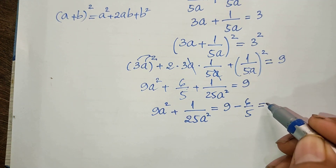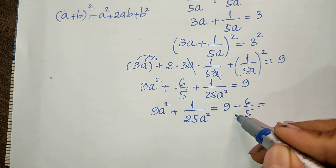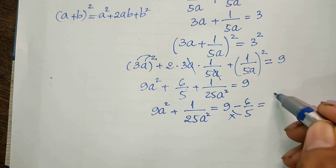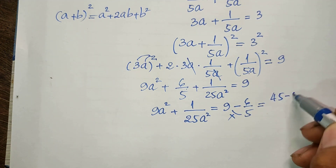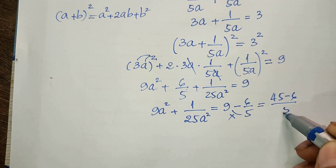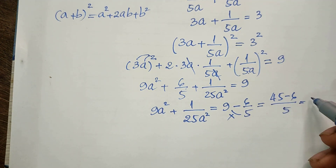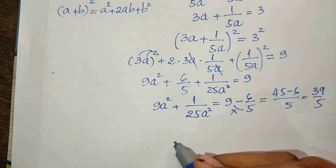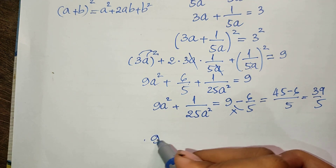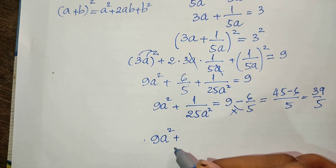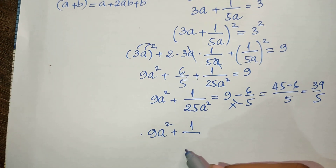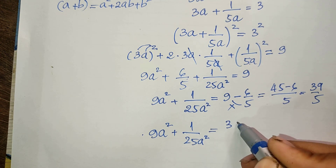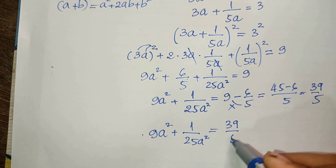Computing the right-hand side: 9 minus 6/5 equals (9 times 5 minus 6) divided by 5, which is (45 minus 6) divided by 5, equals 39/5. So the value of (9a² + 1) divided by 25a² is equal to 39/5.